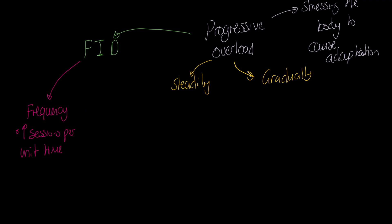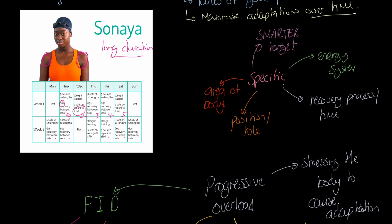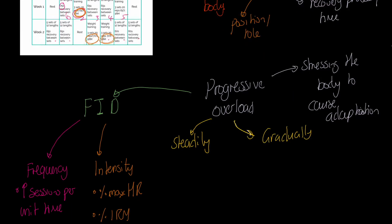The I in FID is intensity. We can increase the percentage of max heart rate — calculated as 220 minus age — for continuous training. For resistance training, we look at percentage of one repetition max or 15 repetition max. For flexibility training, it could be percentage of range of motion. For Sanaya: she's doing 65% one rep max in week one and 70% one rep max in week two — so she is increasing intensity as she progresses.